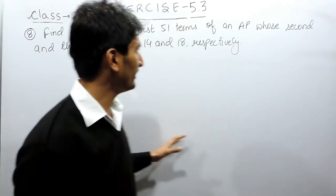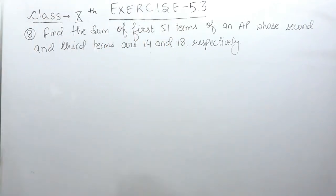Hello everyone, in this video we are going to solve question number 8 of exercise 5.3. The question says, find the sum of first 51 terms of an AP whose second and third term are 14 and 18 respectively.